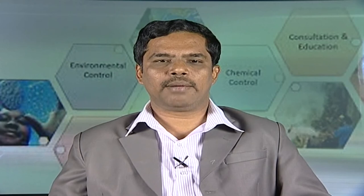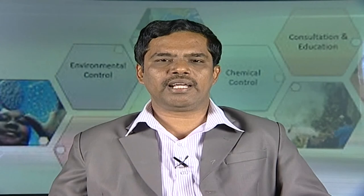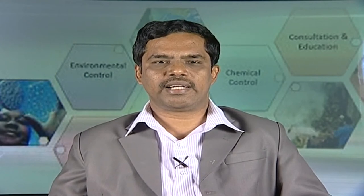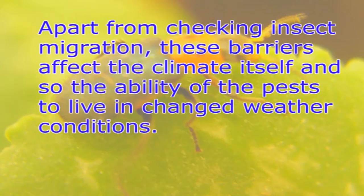Without these barriers, pests would perhaps have been able to counter the adverse effects of climate by migrating to climatically favorable areas as soon as conditions in their native place turned unfavorable. These barriers also affect the climate itself and the ability of pests to live in changed weather conditions. For instance, insects living on the windward side of a mountain are incapable of living on the dry leeward side. Similarly, insects living near large bodies of water are adapted to humid conditions and cannot live in drier conditions, and soil types also limit the distribution of soil insects.